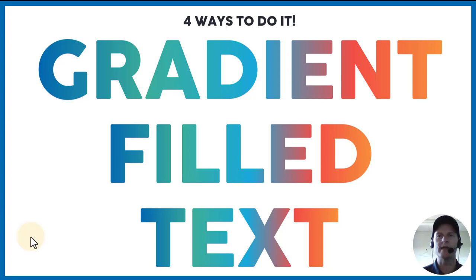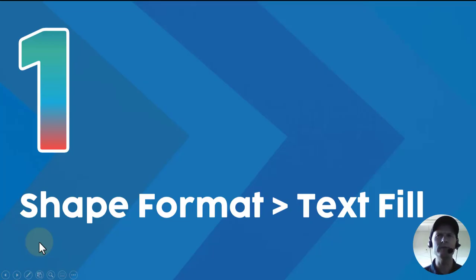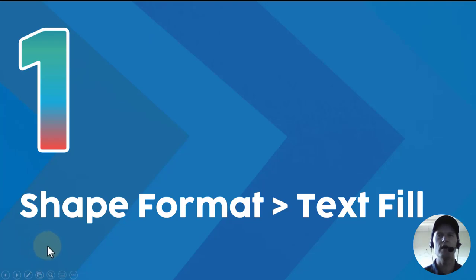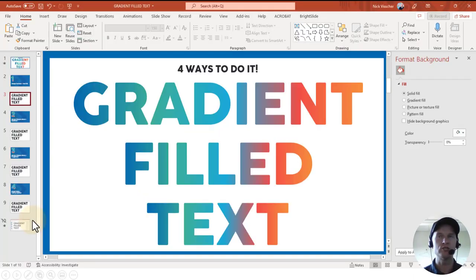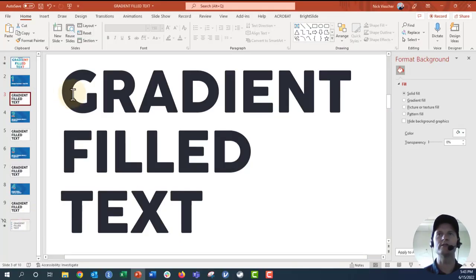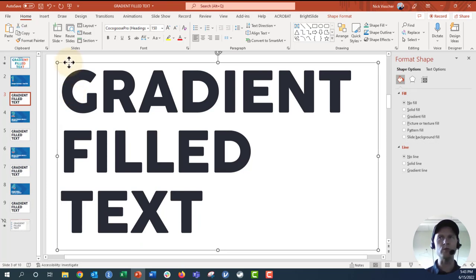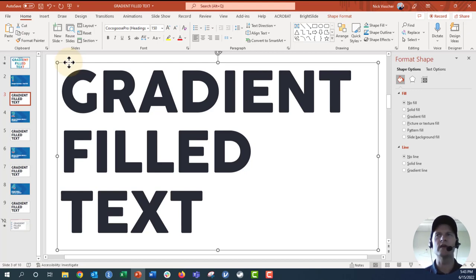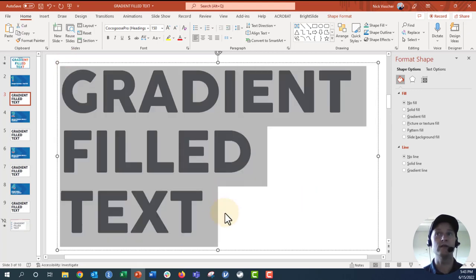So let's go over to the first way to do this, which is probably the way most people would think to do it — and that's just by editing the actual text fill of the text that you have in your text box on your slide. Let's go ahead and get over to my demonstration slide. You can see right here we just have a normal text box with the text filled in black.